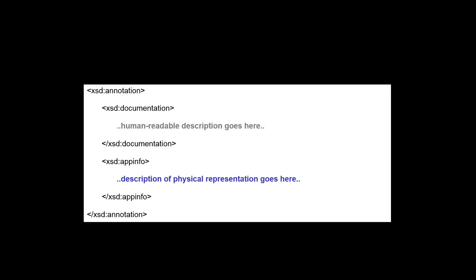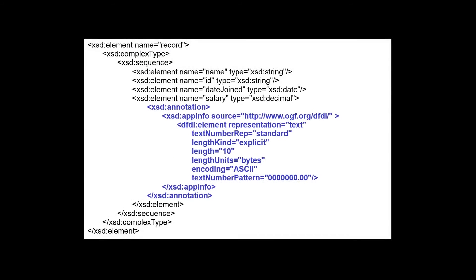The value of the source attribute determines that this app info annotation relates to DFDL, so that other processors ignore the annotation. The description of the physical representation of the data takes the form of special DFDL XML elements that contain DFDL properties. It is these DFDL properties that describe the physical data.